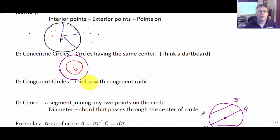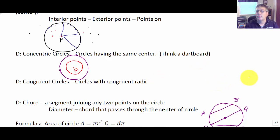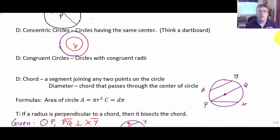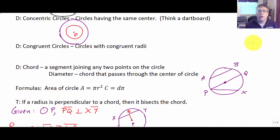Congruent circles are circles with congruent radii. If the radii aren't the same, then the circles are similar but not congruent. So congruent circles are circles with the same radius, or the same length radii.